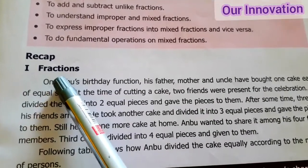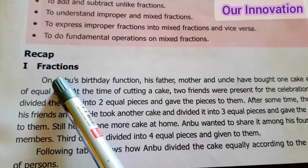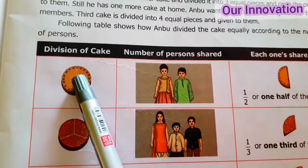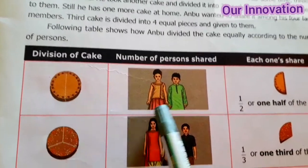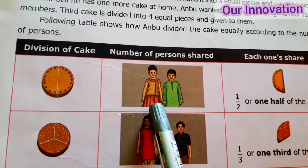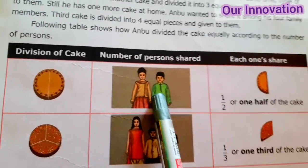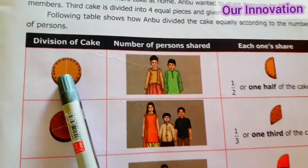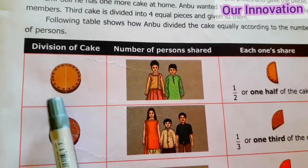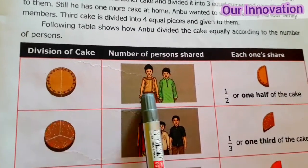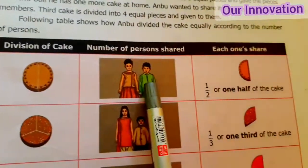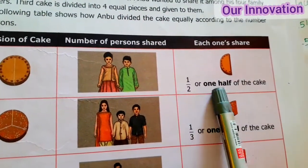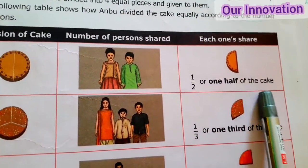Recap: Fractions. Fractions recall — division of cake. Cake is equal to number of persons, so you can share it. 2 persons, so divide into 2. Half cake is equal to half of the cake — 1 half.